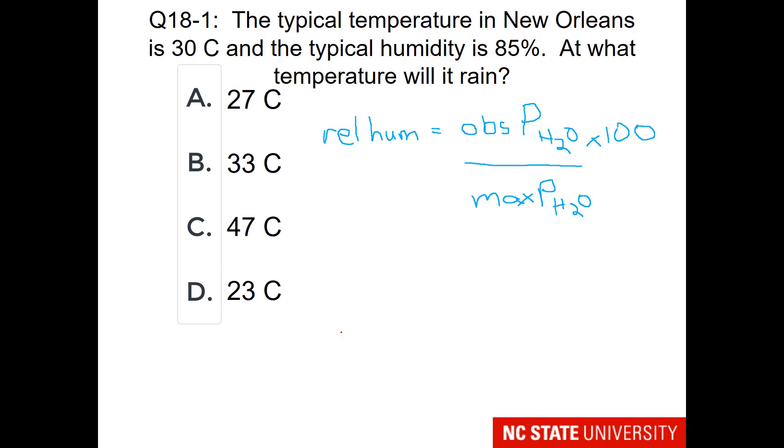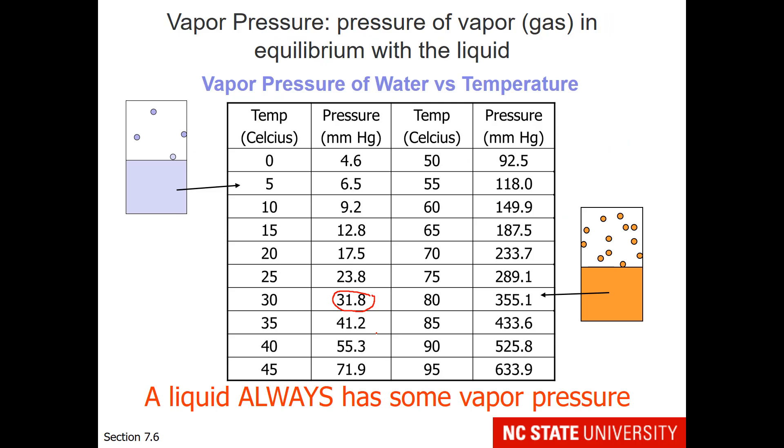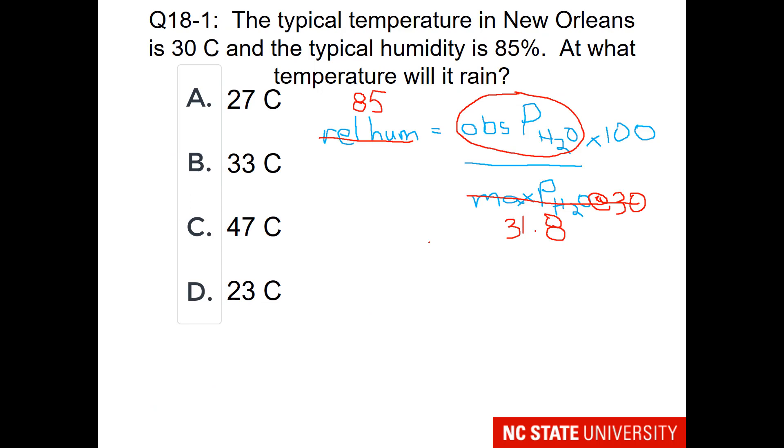So here is our formula. Let me fill in the values. The 85 goes in the relative humidity slot. Now we need to go back to the chart to find the maximum pressure of water at 30 degrees Celsius. The value we need is 31.8. So now please solve for the observed pressure of water. And once you've solved for that, go back to the chart and find the temperature on the chart that has this pressure. The pressure is between two different temperature values, so just pick a value between those two temperatures and that will be your correct answer.